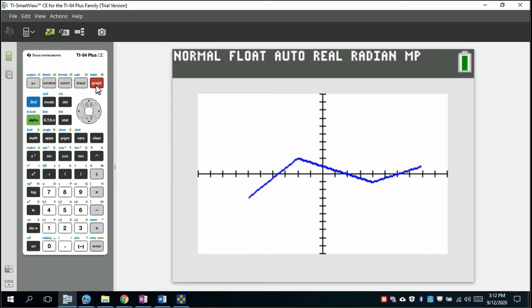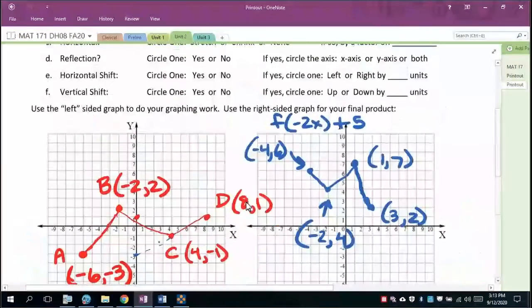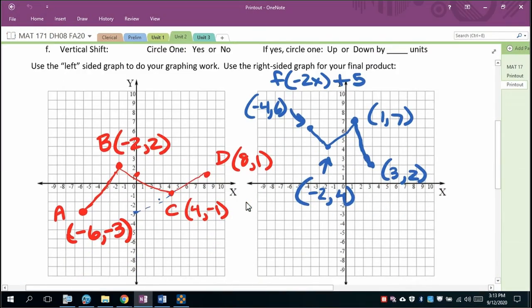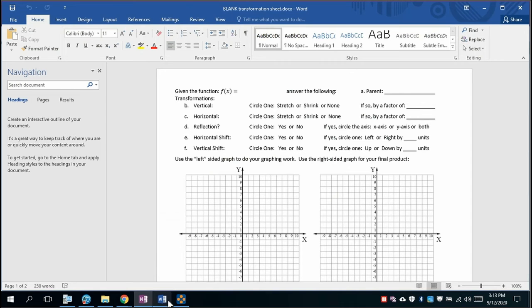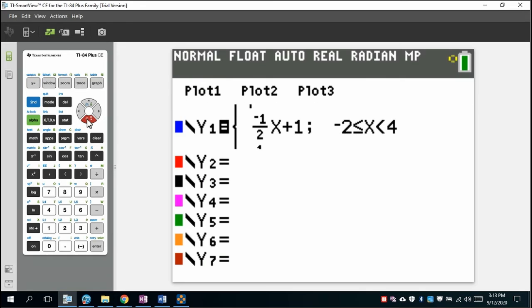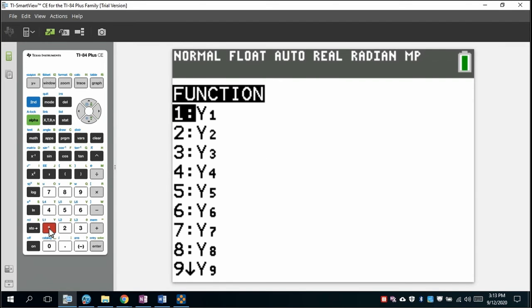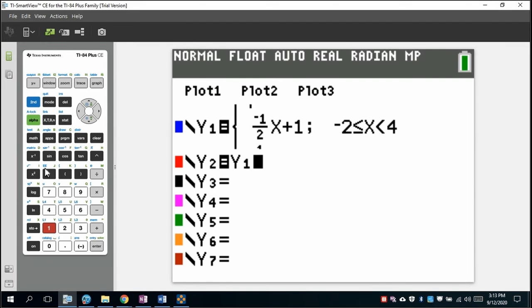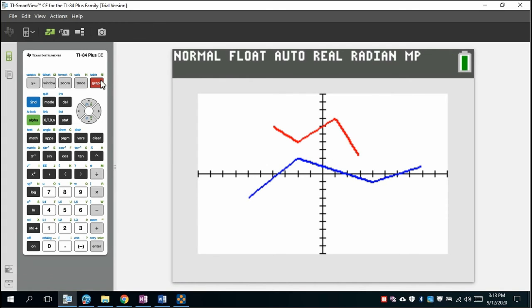So now f of negative 2x plus 5. So here's what I'm going to do. We're going to go to y equals. Now obviously there's no f here, but y1 is f. So we're going to go to vars and choose y1 and it will be y1 of negative 2x, close the parenthesis and then plus 5. So for the graph, and there it is.